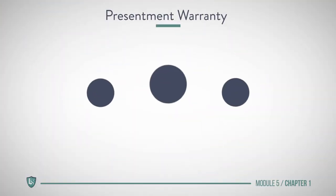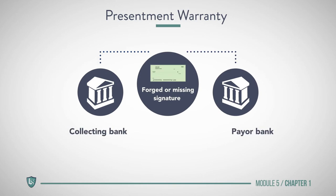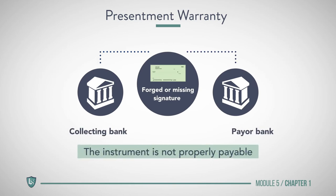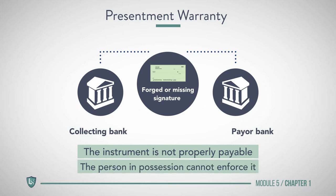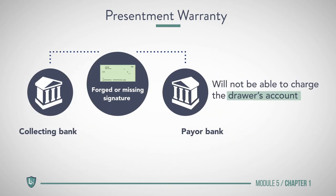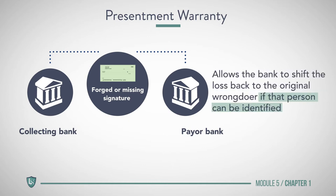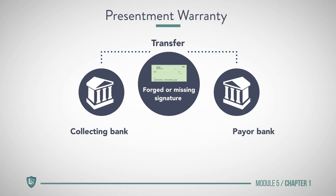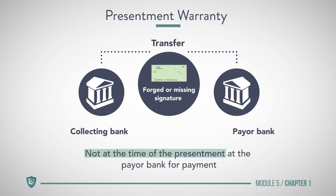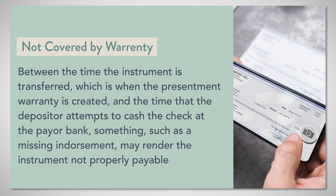A presentment warranty provides that all endorsement signatures are valid. A forged or missing signature means the instrument is not properly payable, and the person in possession cannot enforce it — the payer bank will not be able to charge the drawer's account. This warranty allows the bank to shift the loss back to the original wrongdoer if that person can be identified. Note that the presentment warranty is given at the time of transfer, not at the time of presentment at the payer bank. Between the time the instrument is transferred and the time the depositor attempts to cash the check, something such as a missing endorsement may render the instrument not properly payable.